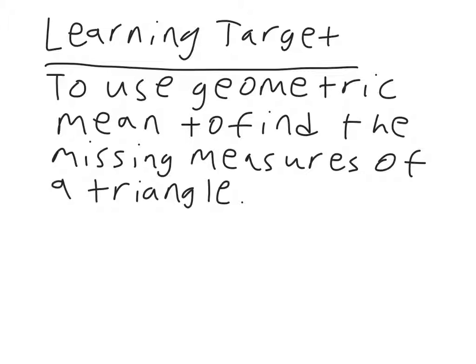You might say, hey, I know what mean is. It's when you add two numbers and then divide by two. So, that's arithmetic mean, or the average. Geometric mean is similar but slightly different. What happens here is you find the product of the two numbers and then take the square root. But there's also a method that we're going to learn that uses proportions, and using that method will help you find missing measures of triangles.